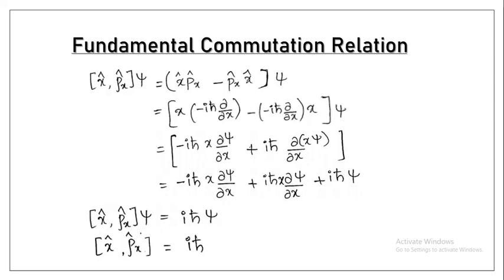From this we conclude: if the commutator is zero, the two quantities can be measured simultaneously; if it is not zero, they cannot. Here the commutator of position and momentum along the same direction equals iħ, not zero — so position and momentum cannot be measured simultaneously, which is nothing but the uncertainty principle. But for different directions, such as y-cap and p-x-cap, the commutator is zero, meaning they can be measured simultaneously.